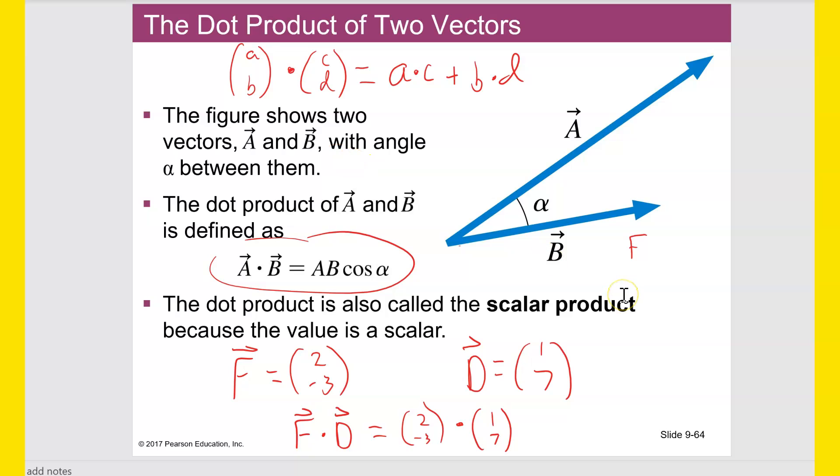So over here, with the little example I had given, that would be 2 times 1 plus negative 3 times 7, which would be 2 plus negative 21, which is negative 19 would be the result.